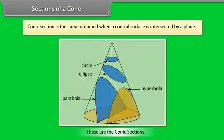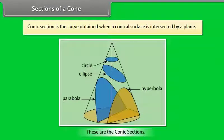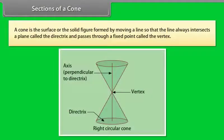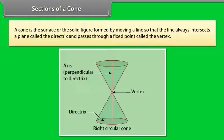Sections of a cone. Conic section is the curve obtained when a conical surface is intersected by a plane. We know that a cone is the surface or solid figure formed by moving a line so that the line always intersects a plane called the directrix and passes through a fixed point called the vertex.